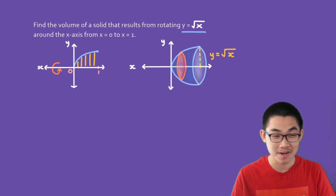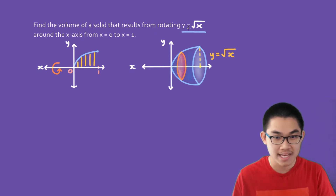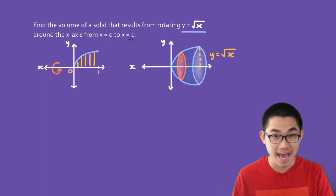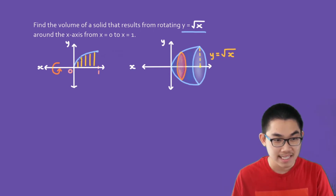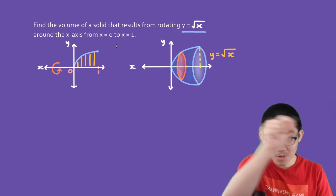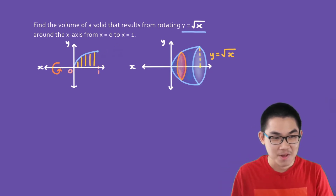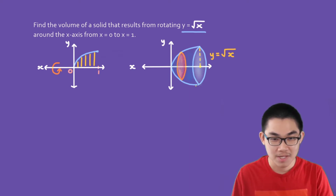So let's take a look at this problem. Find the volume of a solid that results from rotating y equals the square root of x around the x-axis from x equals 0 to x equals 1. We have the blue function y equals the square root of x, and these lines represent the area under this function from 0 to 1. If you rotate this around the x-axis, you end up with a three-dimensional solid that looks something like this.